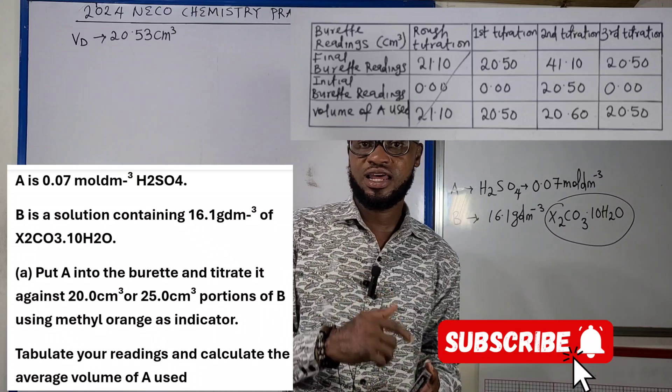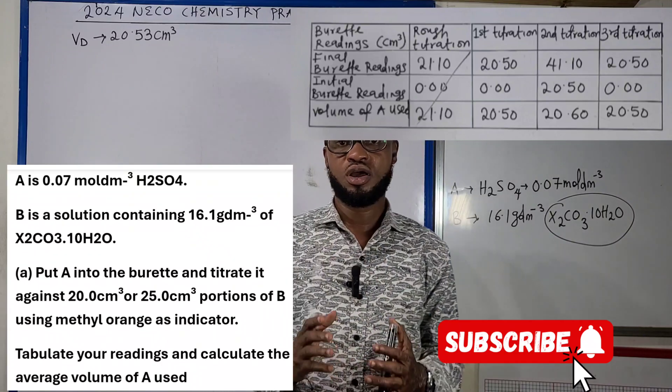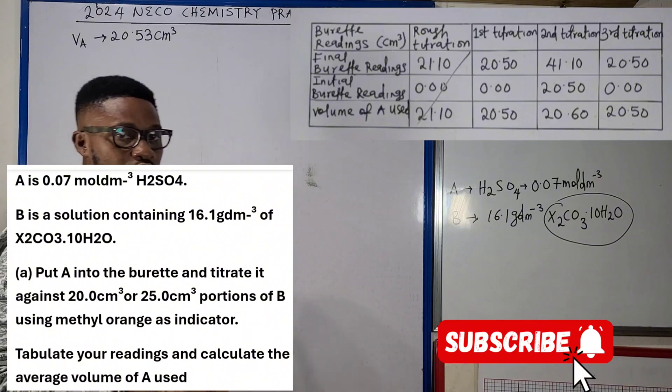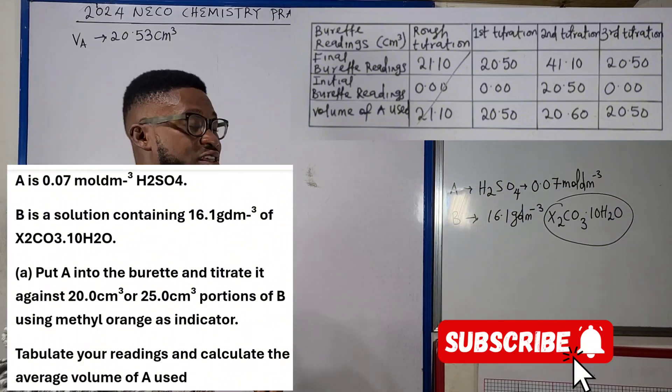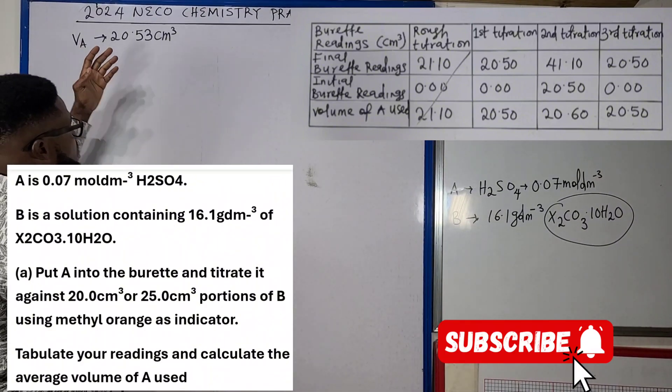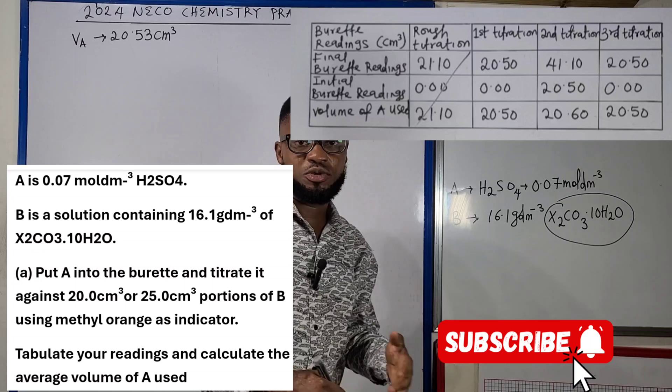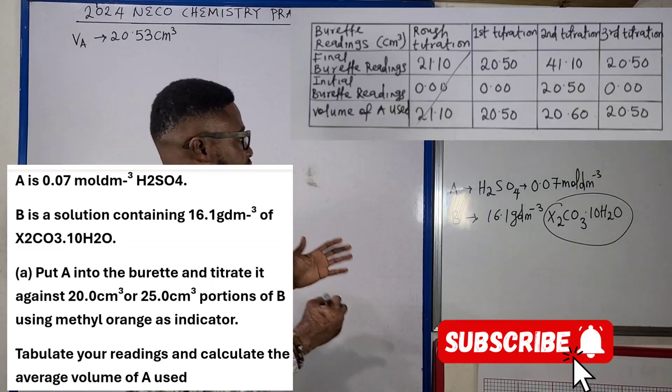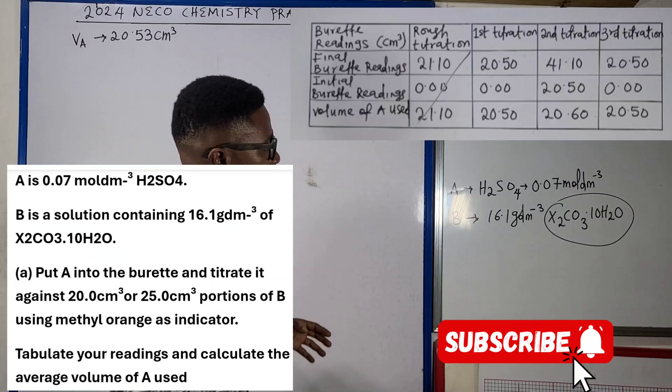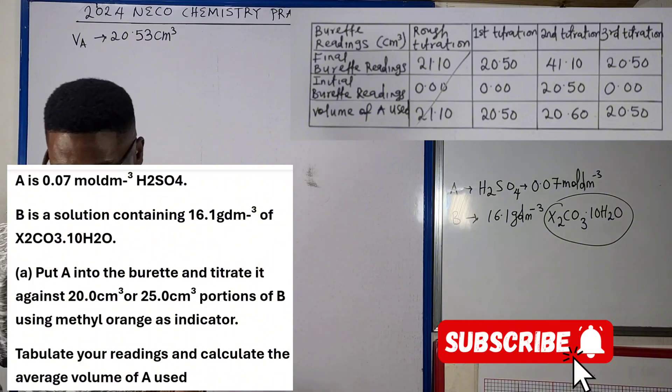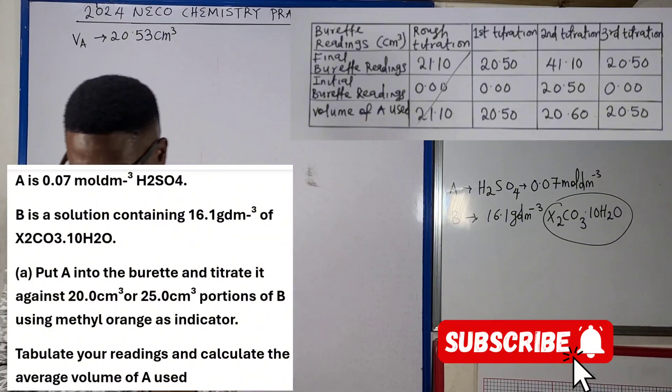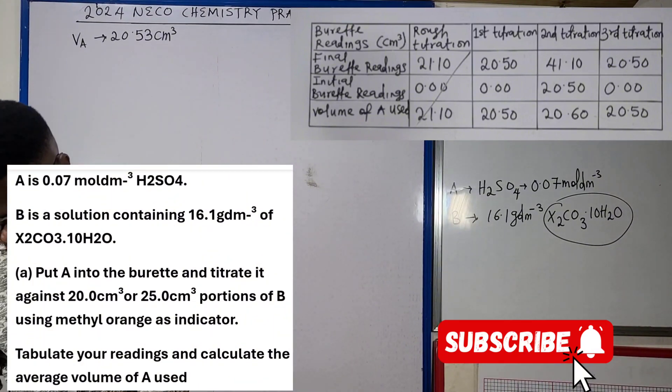Not to forget that in the very first video lecture, the link to that lecture video is in the description. You recall that we have said that our VA is equal to 20.53 cm³, that is our average titre value, having performed the experiment.